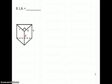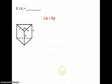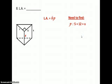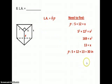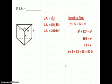Number 8: find the lateral area of a rectangular prism — that's just the sides, not the bases. The formula is lateral area equals H times P, where H is the height and P is the perimeter of the base. The perimeter of the base is 5 plus 12 plus the hypotenuse. Since it's a right triangle, we use the Pythagorean theorem: 5 squared plus 12 squared equals x squared, so x equals 13. The perimeter is 5 + 12 + 13 = 30. Plugging into the formula, our answer is 240 square inches.